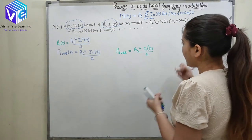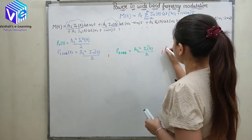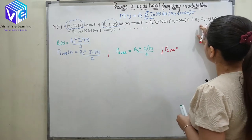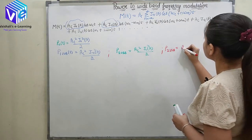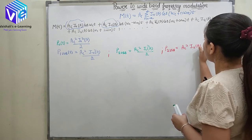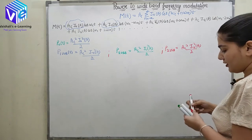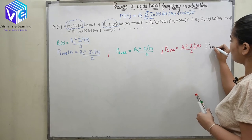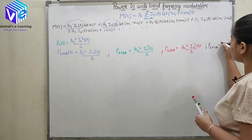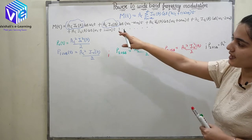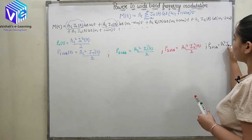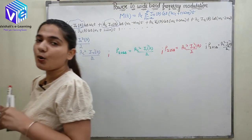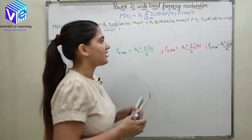The power of the second lower sideband equals AC²·J₋₂²(β) / 2. And the power of the second upper sideband, concluded from that term, is AC²·J2²(β) / 2. This is how we find the power of all of the sidebands.